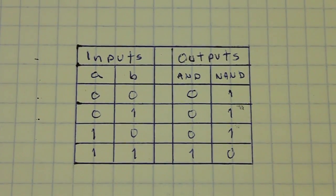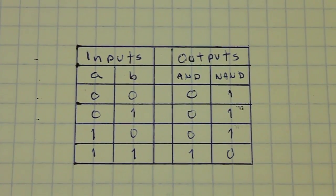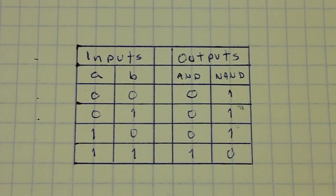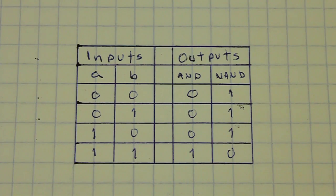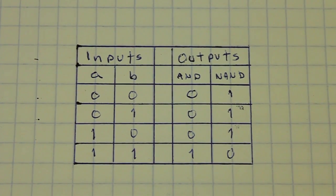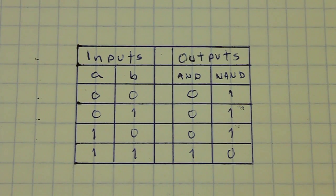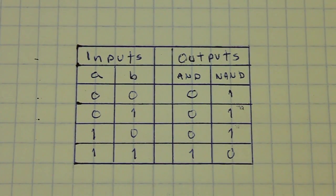Logic gates have two inputs and one output. The output depends on the state of the inputs and they work in binary. That is, we only have zero and one. One represents the presence of a voltage and zero, no voltage.